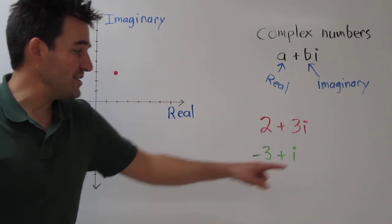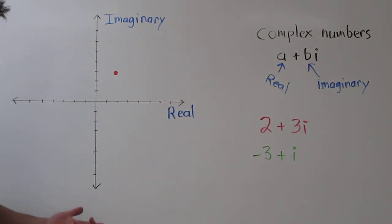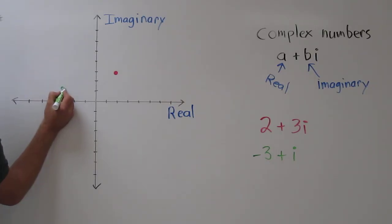So let's go over 3 on the real axis, 1, 2, 3, and up 1 on the imaginary axis. So this complex number is right there.